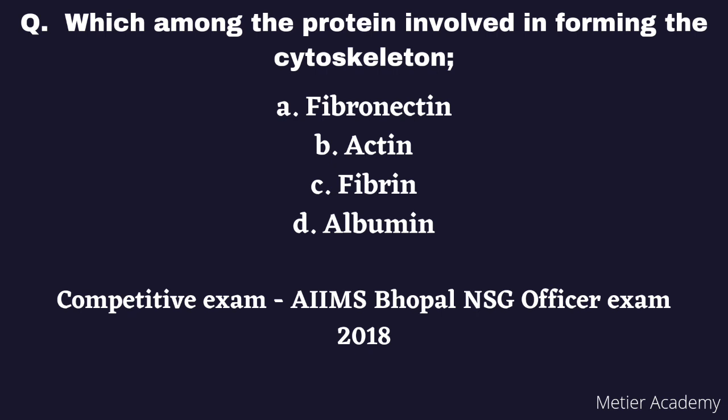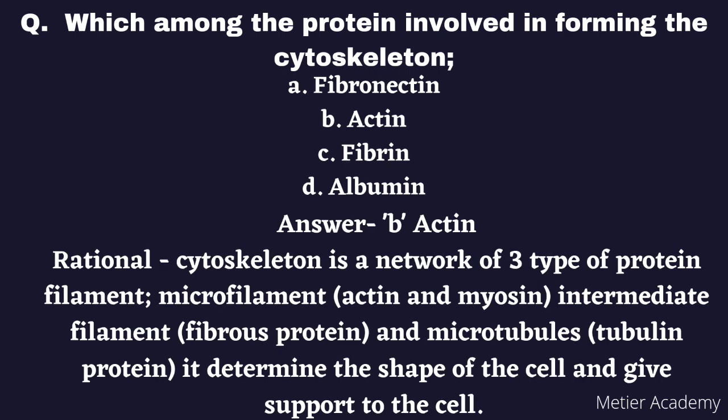The next question is: Which protein is involved in forming the cytoskeleton? Options are: A) Fibronectin, B) Actin, C) Fibrin, D) Albumin. This question was asked in the AIIMS BAPOL Nursing Officer exam, 2018. The correct answer is Option B, Actin. The cytoskeleton is a network of three types of protein filaments: microfilaments (actin and myosin), intermediate filaments (fibrous proteins), and microtubules (tubulin protein), which determine the shape and provide support to the cell.